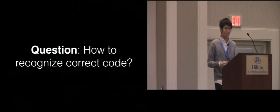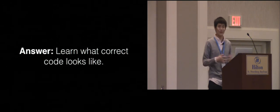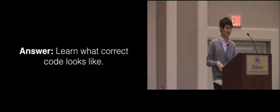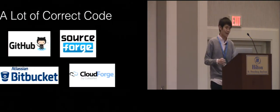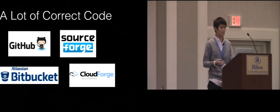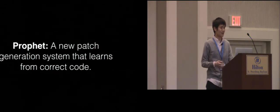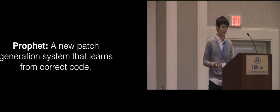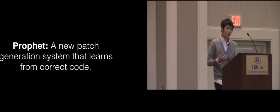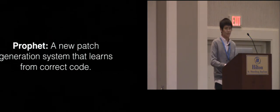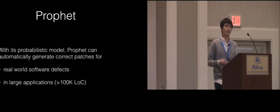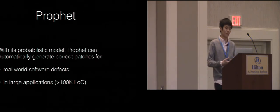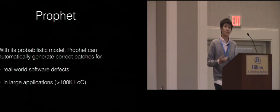The answer I'm going to present today is really simple: learn what correct code looks like and use that to recognize correct patches. There is a lot of correct code out there — we can get it by crawling websites like GitHub and SourceForge. We built a system called Profit, a new patch generation system that learns from correct code to get a probabilistic model of code correctness. Profit can automatically generate correct patches for real-world software defects in large applications, differentiating it from previous systems that only evaluated on small programs or artificially injected errors.